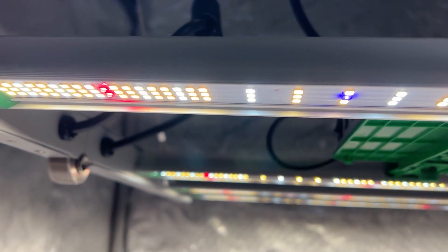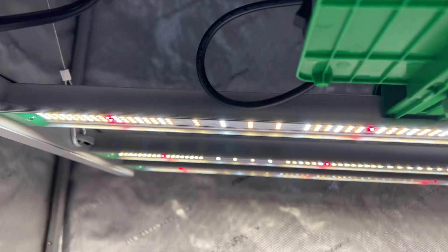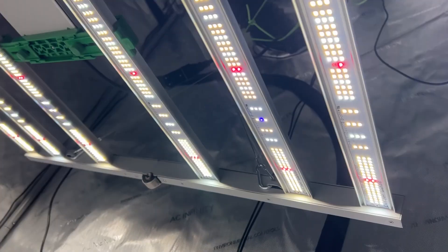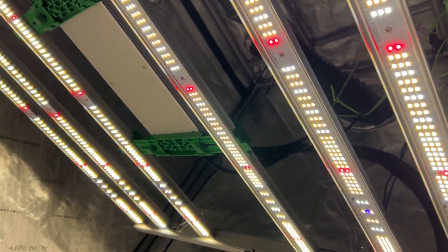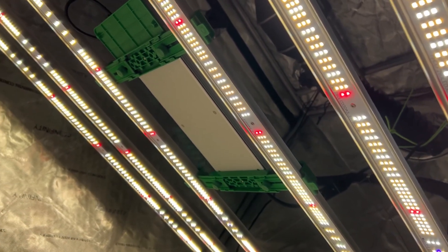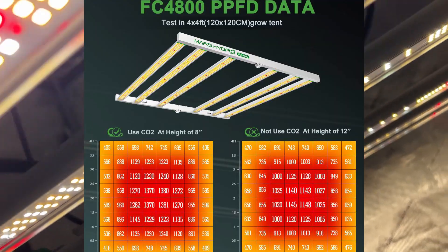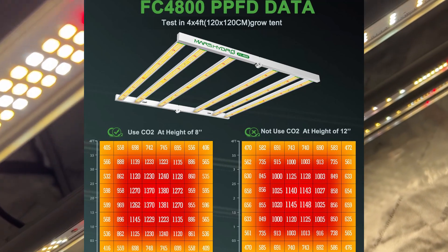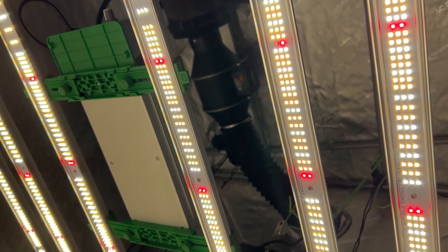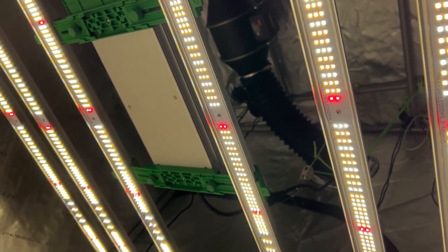And just some hard specs for all you nerds out there. We have a system efficacy of 2.85 micromoles per joule and a light output PPF of 1366 micromoles per second. Here you can see Mars Hydro's own personal PPFD data chart, and that should help you kind of hone in your plants and that light strength for you.